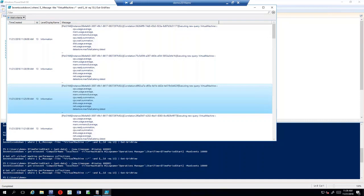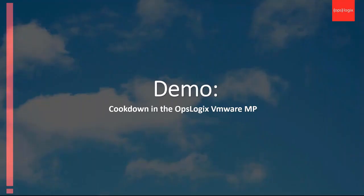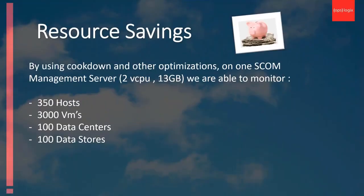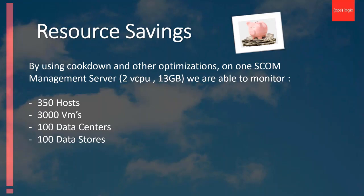Looking at the footprint improvements from using Cookdown: we managed to get stable monitoring of 350 hosts and 3,000 VMs using one single all-in-one-box SCOM server. These numbers show that Cookdown is worth implementing when you have large numbers of targets to monitor. Without Cookdown, you'd be limited to around 800 VMs — a factor of four difference — and about 100 hosts — a factor of three. So it really does make a huge difference, especially when you have a lot of targets to monitor.